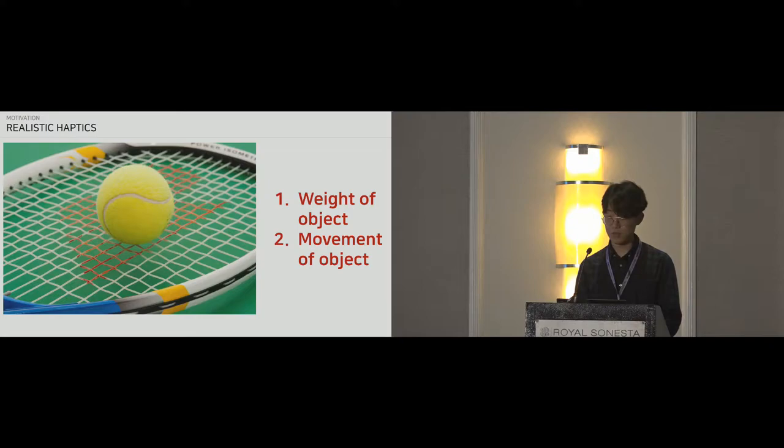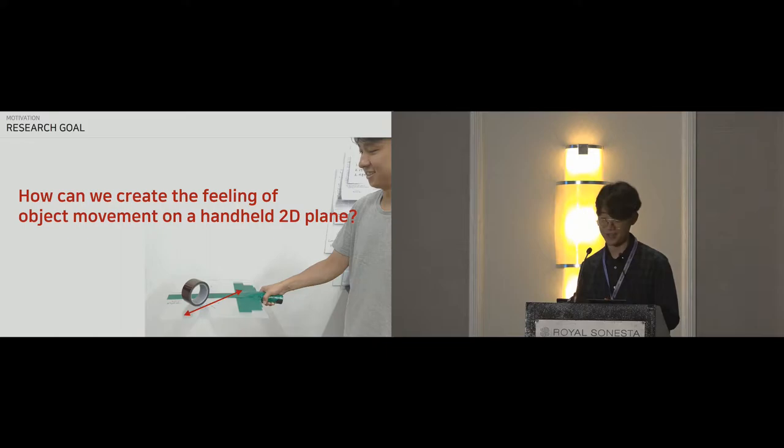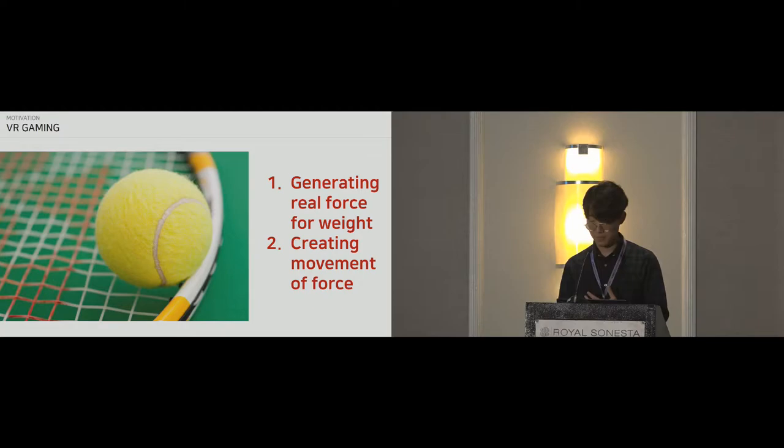Well, intuitively, you would need to perceive two things, the weight of the ball and its movement. And if you could somehow render these feedbacks, then we should be able to feel a moving tennis ball on a racket. Or in other words, we should be able to create the feeling of a moving object on a handheld 2D plane. So how do we create this weight force and move that weight around?